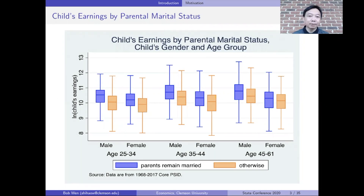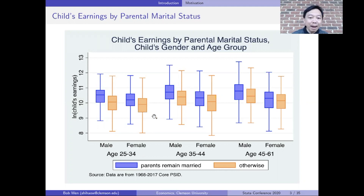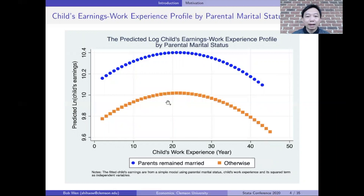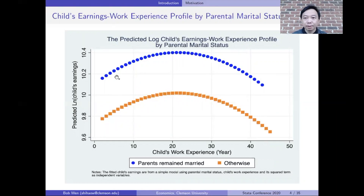I observed that in the United States, American workers are very different in their earnings between the two parental marital groups. I drew this graph using the Stata boxplot command. The graph shows that for each age group and for both male and female workers, those who grew up in families where their parents remained married earn much more than their counterparts who were reared by divorced or separated parents. I see the same pattern in the workers' earnings-experience profiles. The earnings increase as workers become more experienced and then decrease as they become older, but the earnings gap is quite obvious between the two groups.